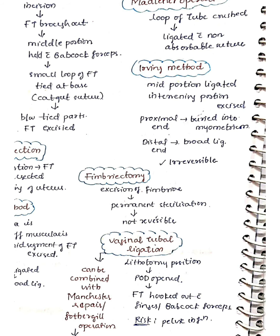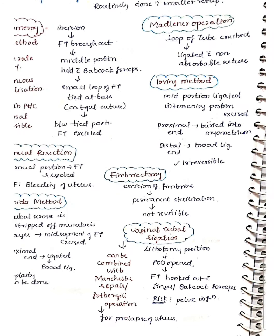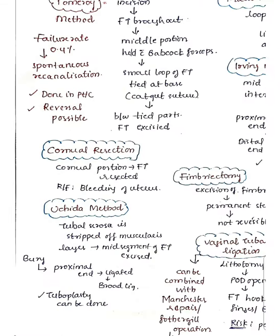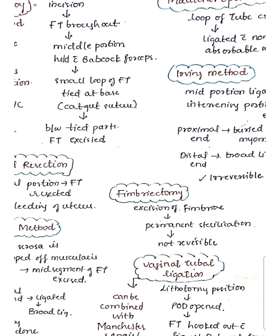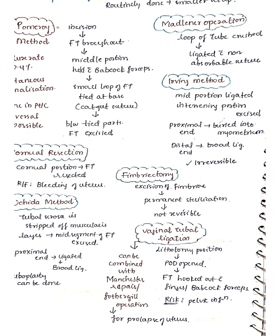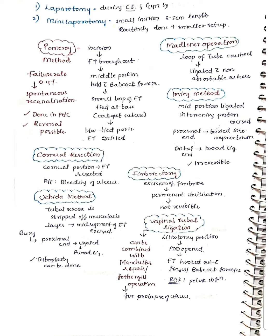The Irving method is irreversible. In corneal resection, the cornual portion of the fallopian tube is resected; the risk here is uterine bleeding and hematoma. In fimbrectomy, the fimbrial part of the fallopian tube is excised, making pregnancy impossible — it is a permanent and non-reversible sterilization.